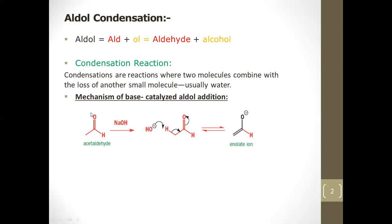This is the first step of aldol addition — not aldol condensation yet. Here we have acetaldehyde, which is the simplest possible enolizable aldehyde. It has a carbonyl group and an alpha hydrogen on the alpha carbon. The hydrogen on the alpha carbon is called the alpha hydrogen.